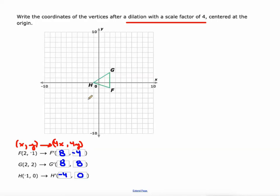So now we'll plot these points. Even though in IXL terms we're done, I want to show you that it actually works. So let's go 8, negative 4, 8, 8, and negative 4, 0.